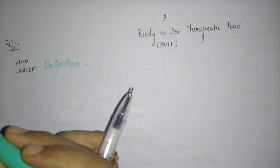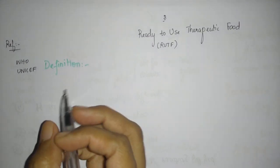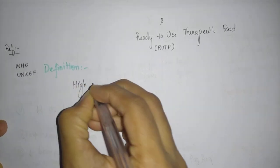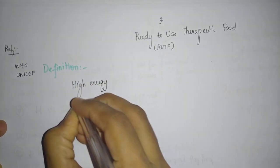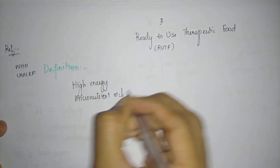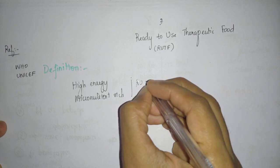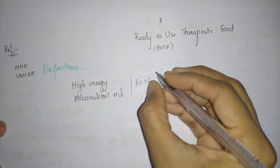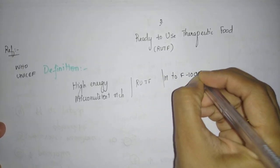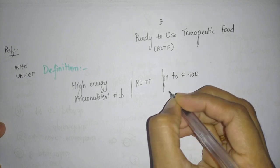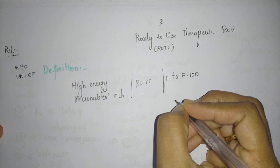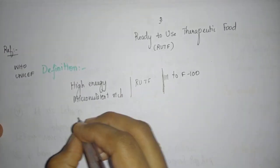RUTF is high energy, micronutrient-rich, ready-to-eat therapeutic food, which is similar to F-100 by the standards of WHO and UNICEF according to SAM guidelines. That will be your definition. It's a homogeneous mix of lipid-rich and water-soluble food.